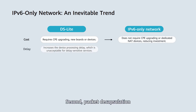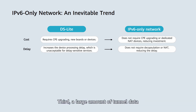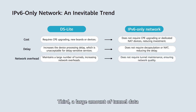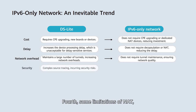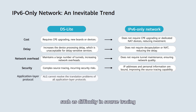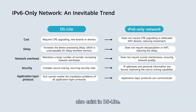Second, packet decapsulation and NAT increase the device processing delay, making it unsuitable for delay-sensitive services. Third, a large amount of tunnel data needs to be maintained, increasing network overheads and potentially affecting network quality. Fourth, some limitations of NAT — such as difficulty in source tracing and the inability to translate complex protocol packets like HTTPS packets — also exist in DS-Lite.